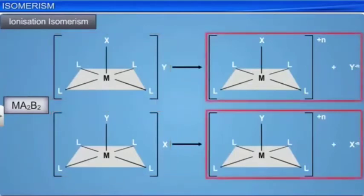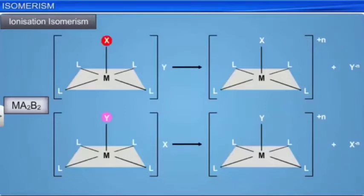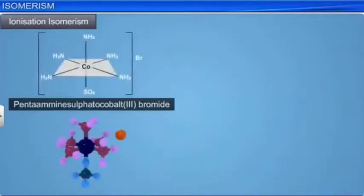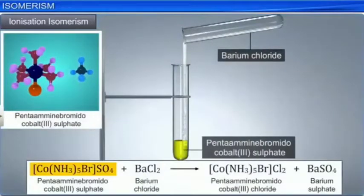This type of isomerism is due to the exchange of groups between the complex ion and the ions outside it. The composition can be determined by a precipitation reaction. Pentaamine sulfato-cobalt(3)-bromide and pentaamine bromido-cobalt(3)-sulfate are two ionization isomers. The first isomer gives a white precipitate of barium sulfate with barium chloride solution, confirming the presence of free sulfate ions.